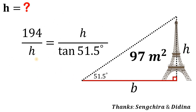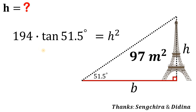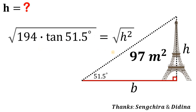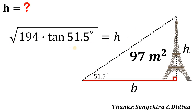We can now solve for H by cross multiplying: 194 multiplied by tangent of 51.5 degrees equals H times H, which gives us H squared. To find H, we take the square root of both sides. Since H is the height of the tower, we only want the positive value, so H equals the square root of 194 times tangent of 51.5 degrees. For an approximation, this value equals 15.62 meters.